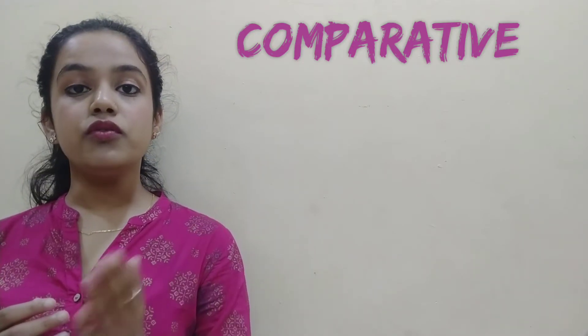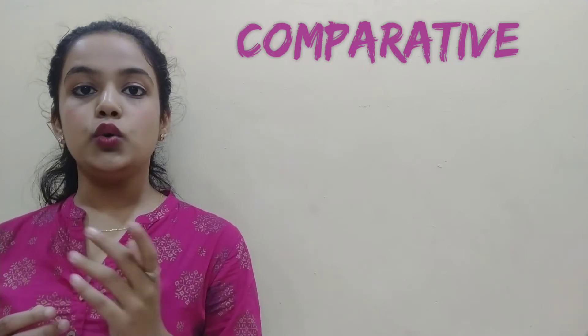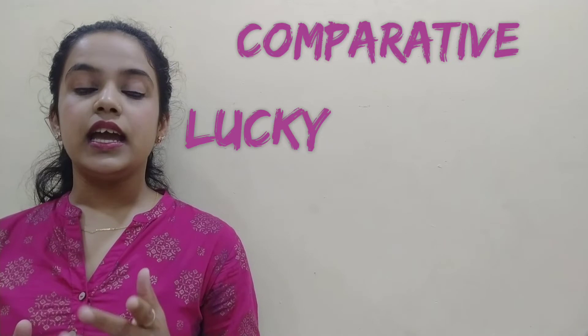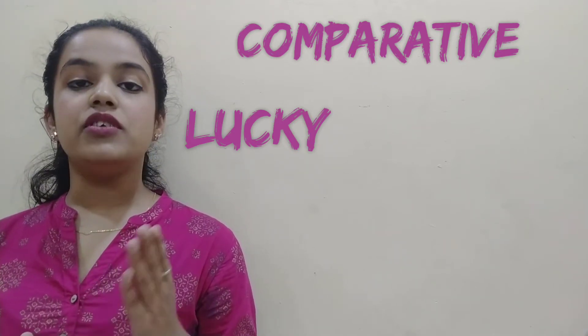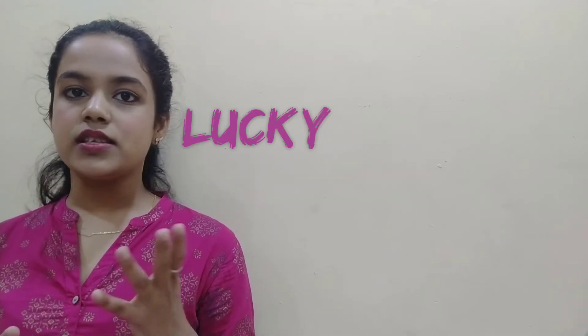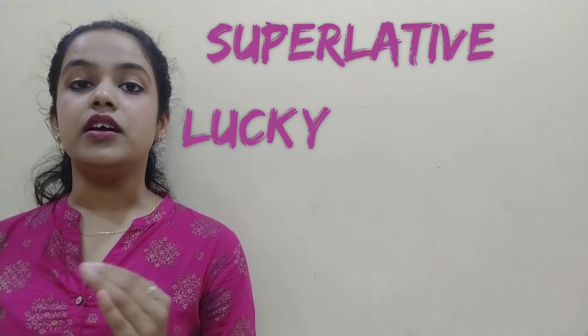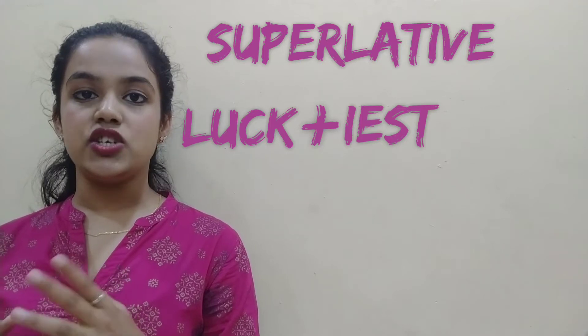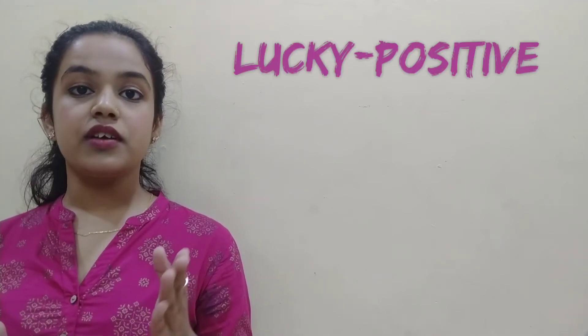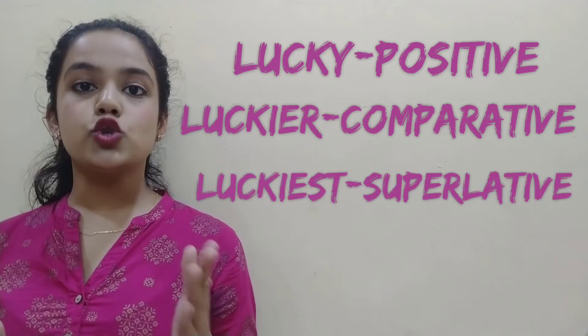Rule number three: if your adjective ends with the consonant Y and you have to convert it into comparative degree, remove the Y and add IER. For example, the word 'lucky' — Y is a consonant, so remove the Y and add IER, giving 'luckier'. To convert it into superlative degree, remove the Y and add IEST, giving 'luckiest'. So: 'lucky' — positive, 'luckier' — comparative, 'luckiest' — superlative.